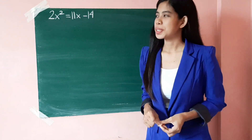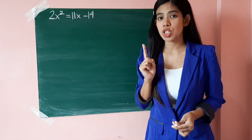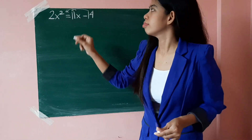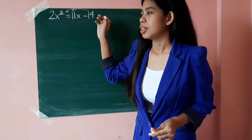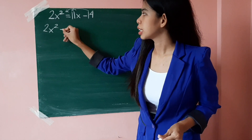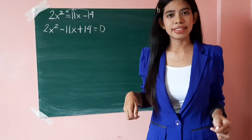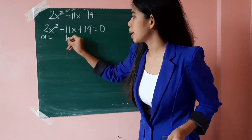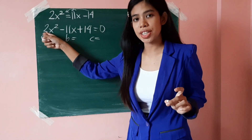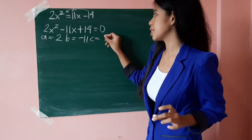Let us have the last example. You are given 2x squared equals 11x minus 14. The first step is to make sure the quadratic equation is written in standard form, so we transpose the linear term and constant term to get 2x squared minus 11x plus 14 equals 0. The value of a is 2, the value of b is negative 11, and the value of c is 14.